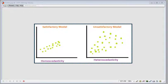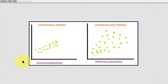I'm going to show you how to check for homoscedasticity, which is an assumption about the residuals of your data in a multiple regression model.